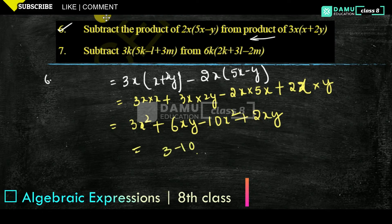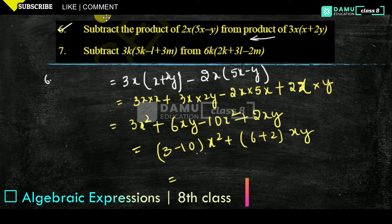We can simplify: 3 minus 10 into x squared, plus 6 plus 2 into xy. So 3 minus 10 gives minus 7x squared, plus 8xy. That is the answer.